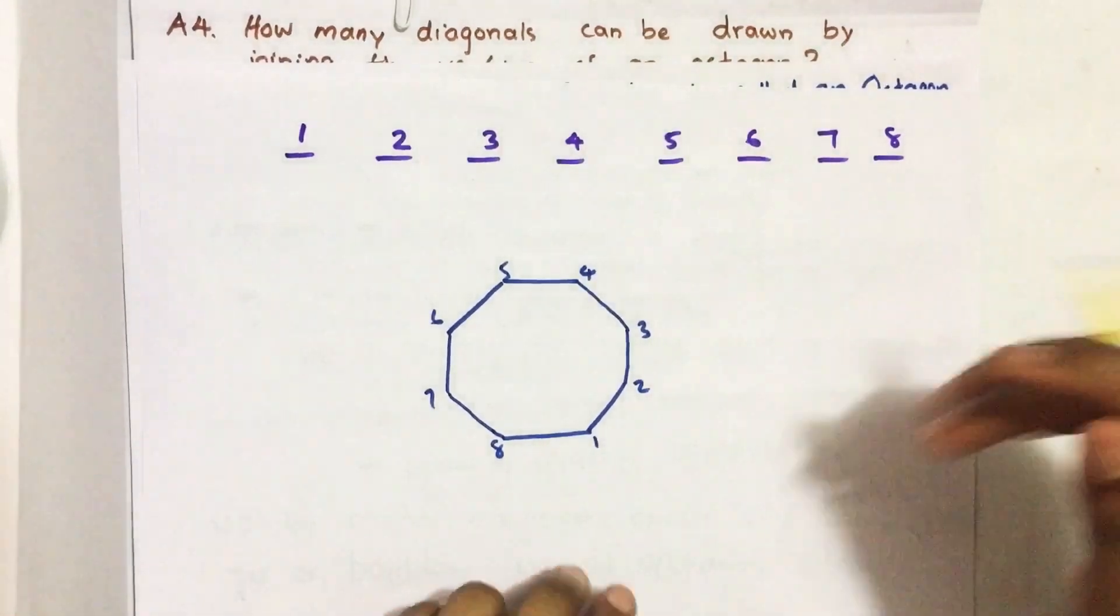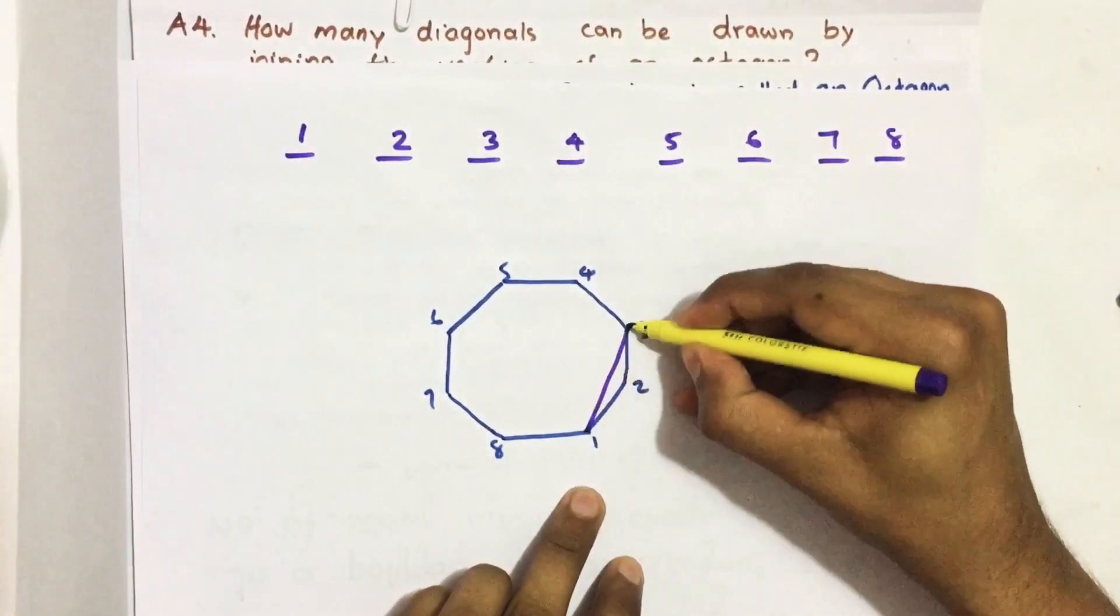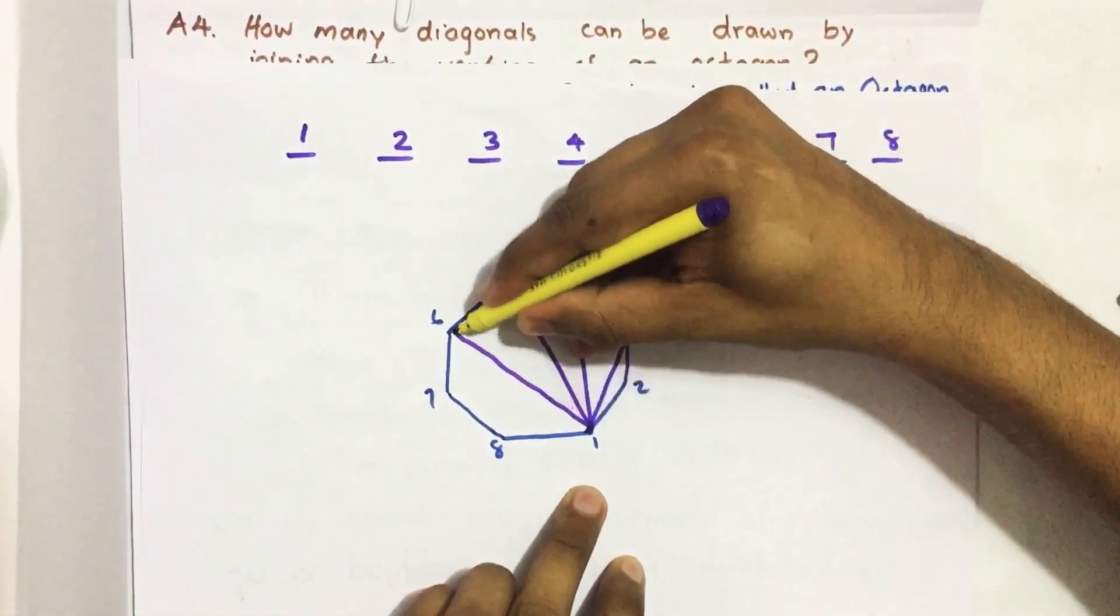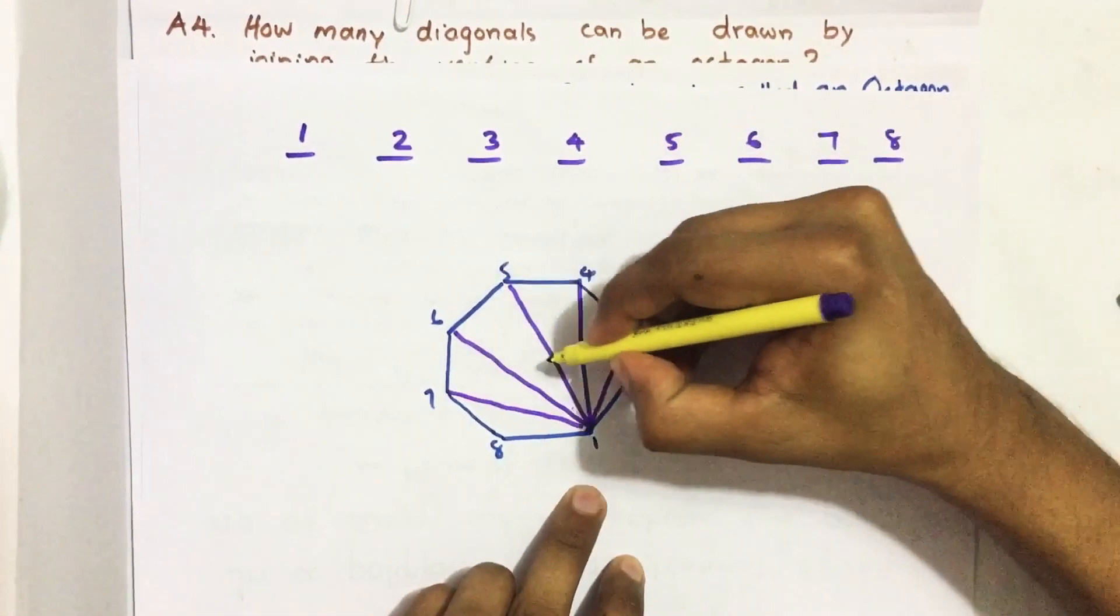Here from vertex 1, I can draw diagonals like 1 to 3, 1 to 4, 1 to 5, 1 to 6, 1 to 7. That's 1, 2, 3, 4, 5. I can draw 5.